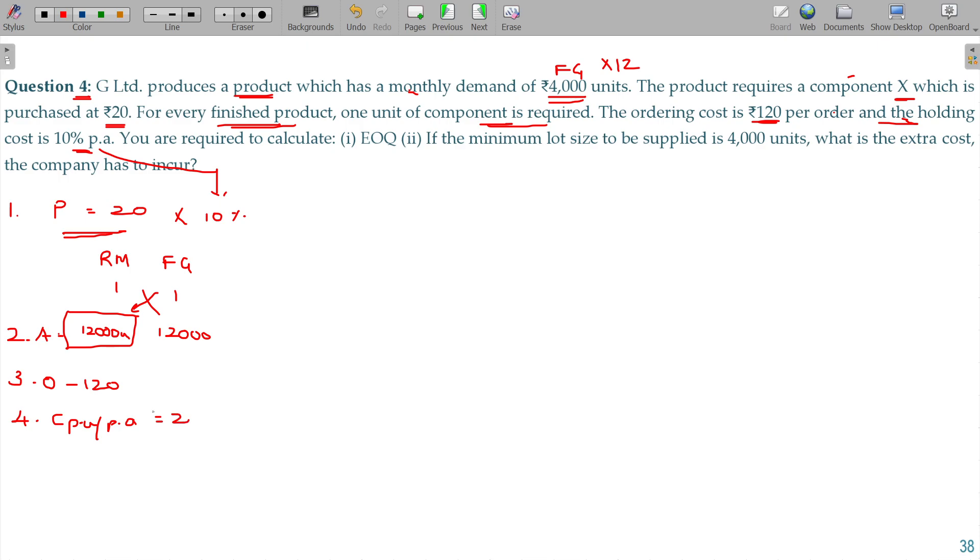You are required to calculate the EOQ. So EOQ is equivalent to root of 2AO by C: 2 into annual requirement 12,000 and ordering cost being 120, carrying cost being 2.